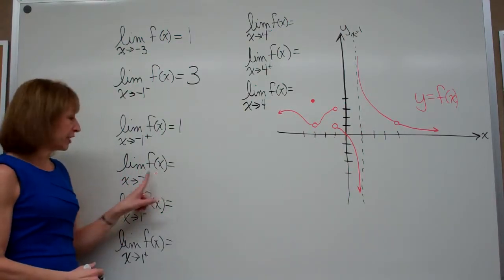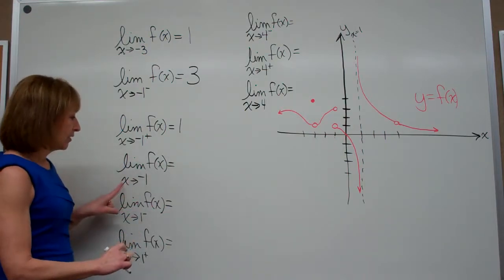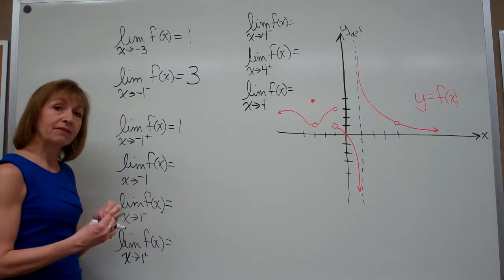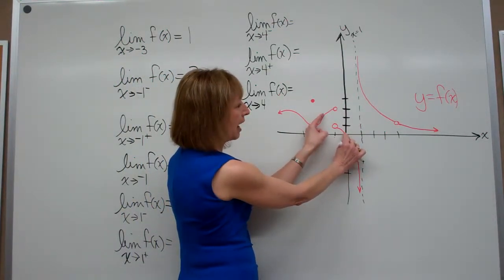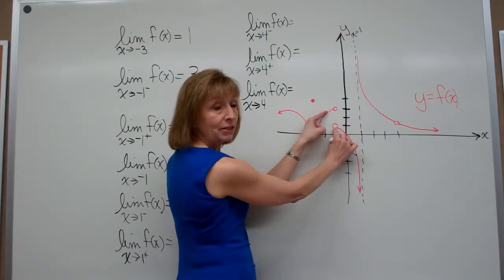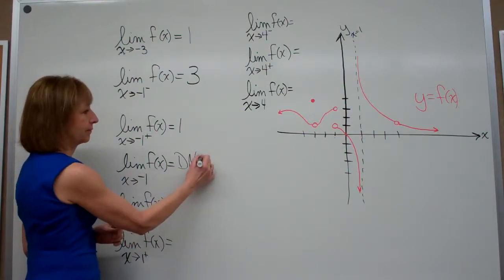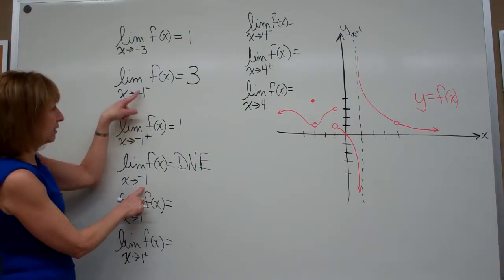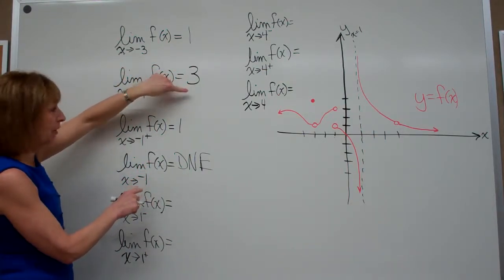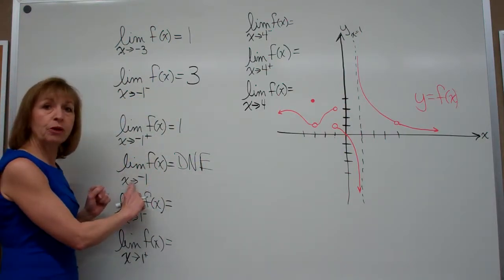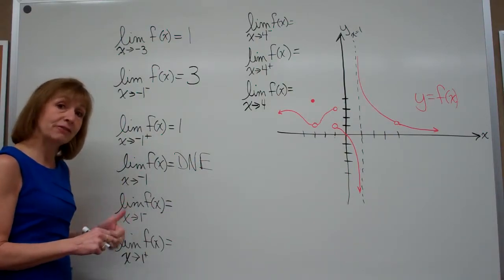If they ask the limit of my function as x approaches negative 1 with no plus or minus sign, that means I have to come in from both sides. This limit is a specific value that the function values are approaching from both sides. As I approach negative 1 from both sides, my left-hand limit is going to 3 and my right-hand limit is going to 1 — they're not going to the same unique value, so that limit does not exist. If the left-hand limit differs from the right-hand limit, the overall limit does not exist.